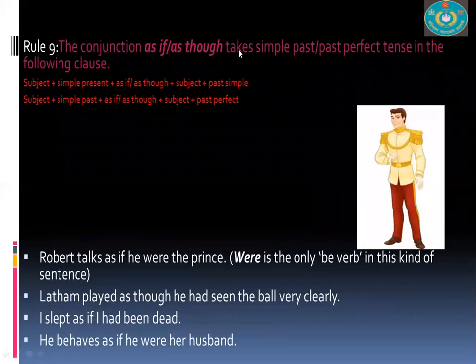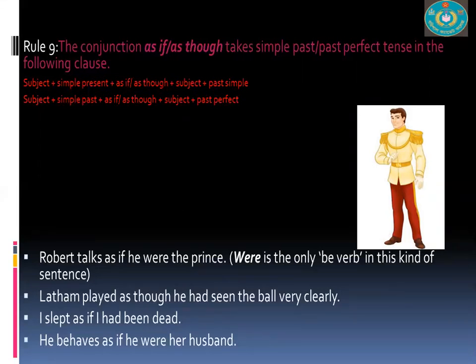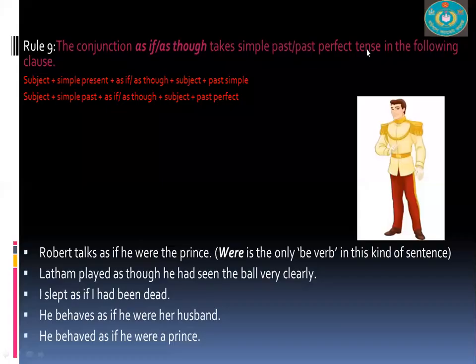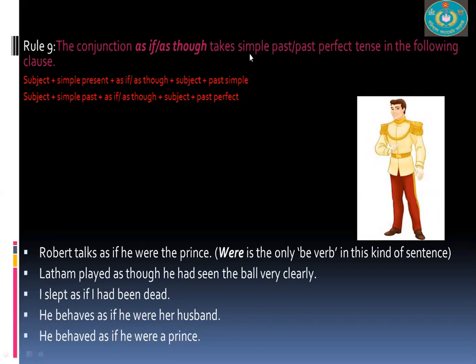The conjunction 'as if' or 'as though' takes simple past or past perfect tense in the following clause. Structure: subject + simple present + as if + subject + past simple. Or: subject + simple past + as if/as though + subject + past perfect. Examples: 'Robert talks as if he were the prince.' 'Lacom played as though he had seen the ball very clearly.' 'I slept as if I had been dead.' 'He behaves as if he were her husband.' 'As if' and 'as though' express an unreal situation which is not true.